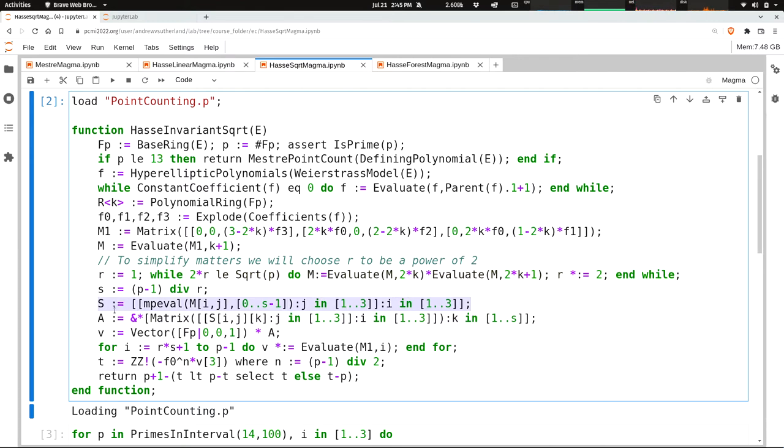And then this next step, we're using the multi-point evaluation, applying it to all nine entries. So that's why there's a three-by-three instantiation here where we're applying multi-point evaluation to each matrix entry, M sub i, M sub j. And then this line is computing the product of those matrices of the multi-point evaluations.